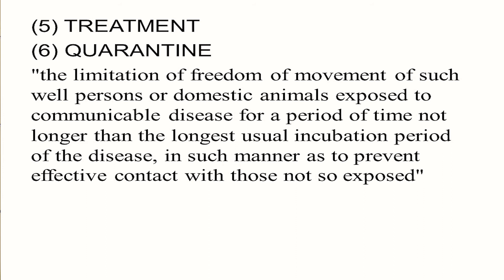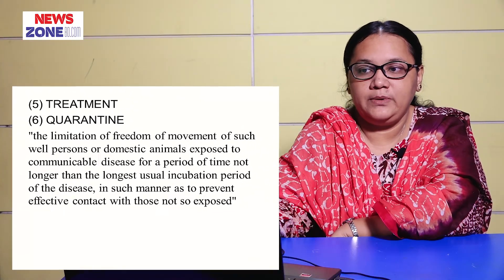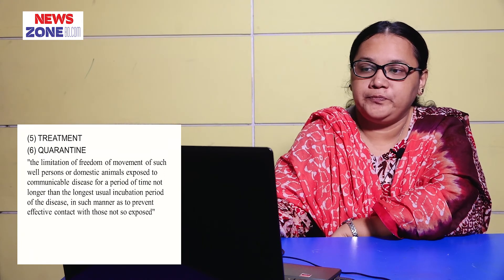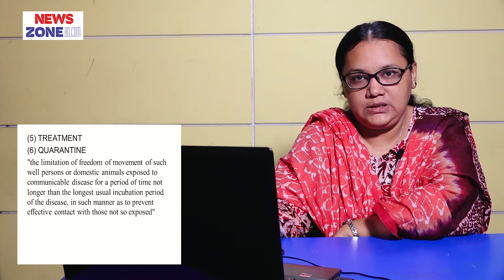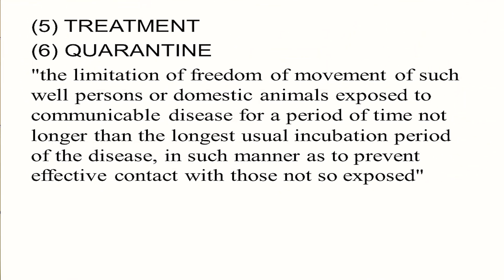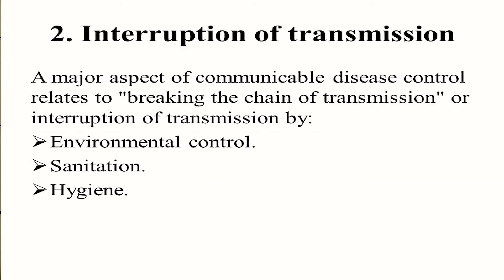Then treatment, then quarantine. Quarantine is the limitation of freedom of movement of well persons or domestic animals exposed to a communicable disease for a period of time not longer than the longest usual incubation period of the disease, in such manner as to prevent effective contact with those not so exposed, then prevent transmission. Interruption of transmission is a major aspect of communicable disease control related to breaking the chain of transmission.